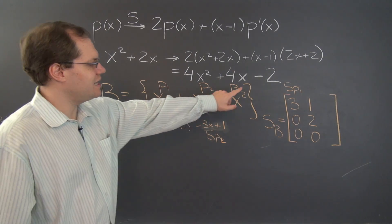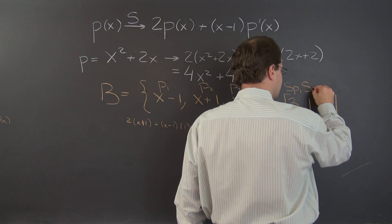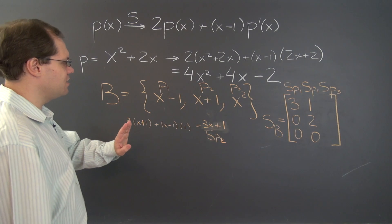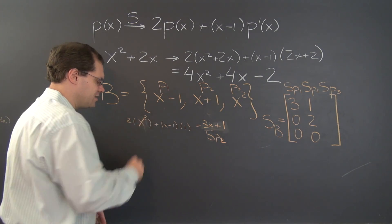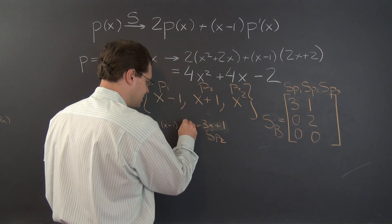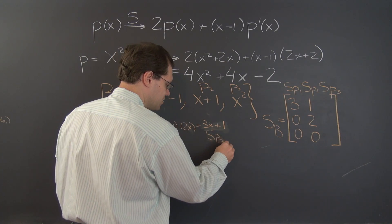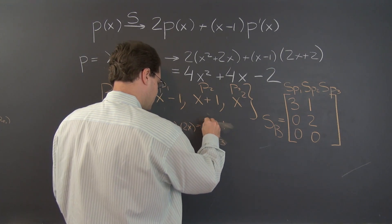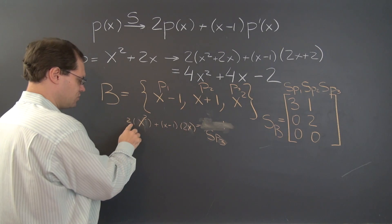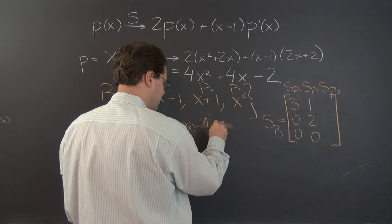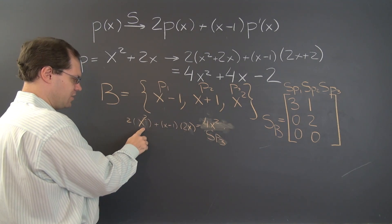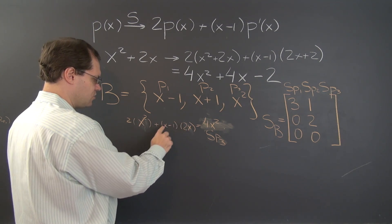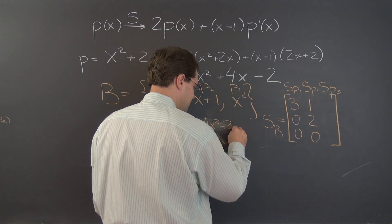Finally, the exact same thing for S of P3. So P3 equals x squared. So it's 2 times x squared plus x minus 1 times its derivative. And that will be S of P3. So we have 2x squared. Nope, not 2x squared. So 2x squared from here and 2x squared from here. So 4x squared. No x here. Minus 2x. So 4x squared and then minus 2x.